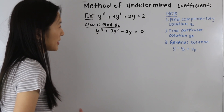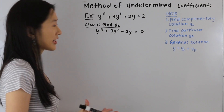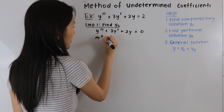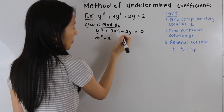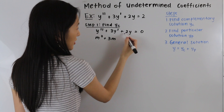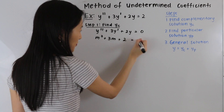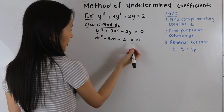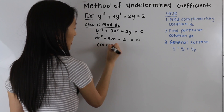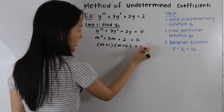The next step is to find our auxiliary equation. Essentially, all we do is replace our y double prime with m squared, our y prime with m, and for the constant term times y we just write our constant term. Then we go ahead and factor this, and we end up with m plus 1 times m plus 2 is equal to 0.